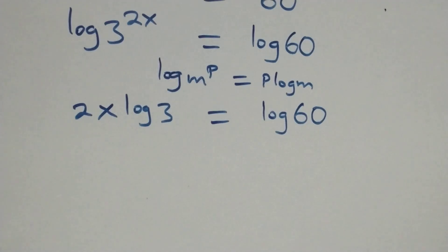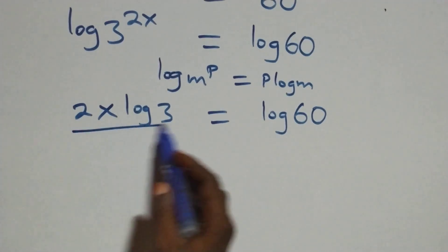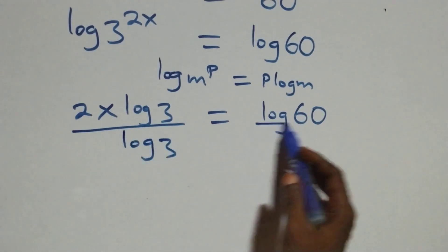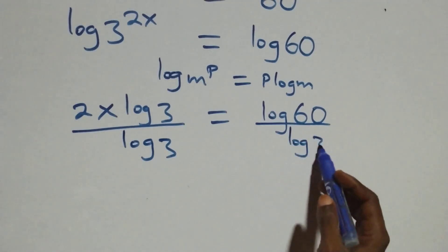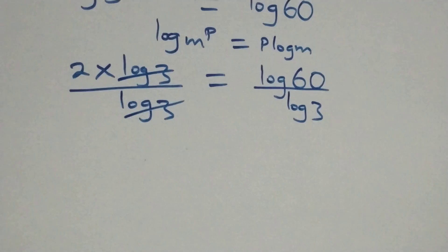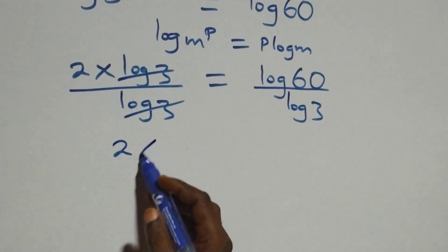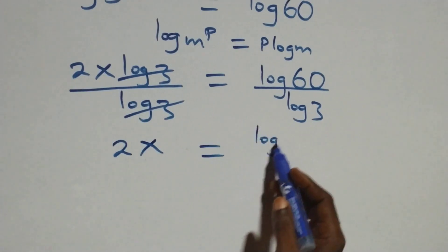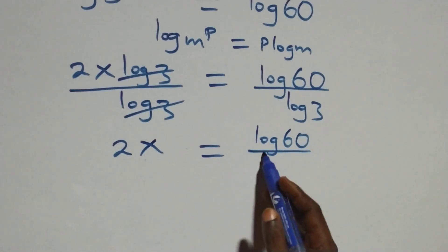The next step: we divide both sides by log three. Log three cancels on the left side and we have two x equals log sixty over log three.